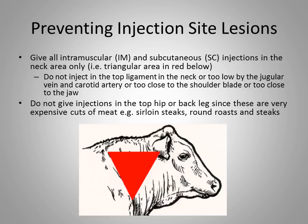We also don't want to hit the shoulder, as we can break the tip of the needle off or make cattle lame. We don't want to go too low in the neck either, because the jugular vein and carotid artery are there, and animals can actually react to products given in the wrong route and die. It's important to give injections in that triangular red area and to stay away from the top hip or back leg, as those are our sirloin steaks and round roasts and steaks.